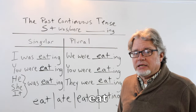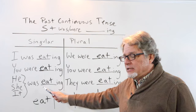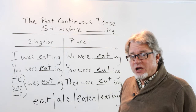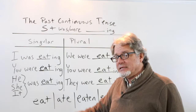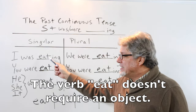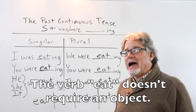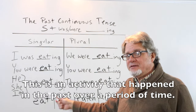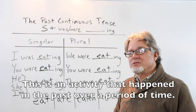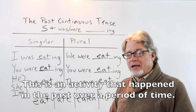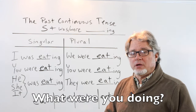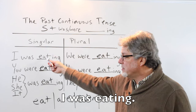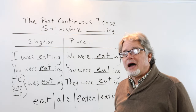The verb eat is a good choice for demonstration because it is short and doesn't require an object. I was eating. You were eating. He was eating. This is an activity that happened in the past over a period of time. What were you doing? I was eating.